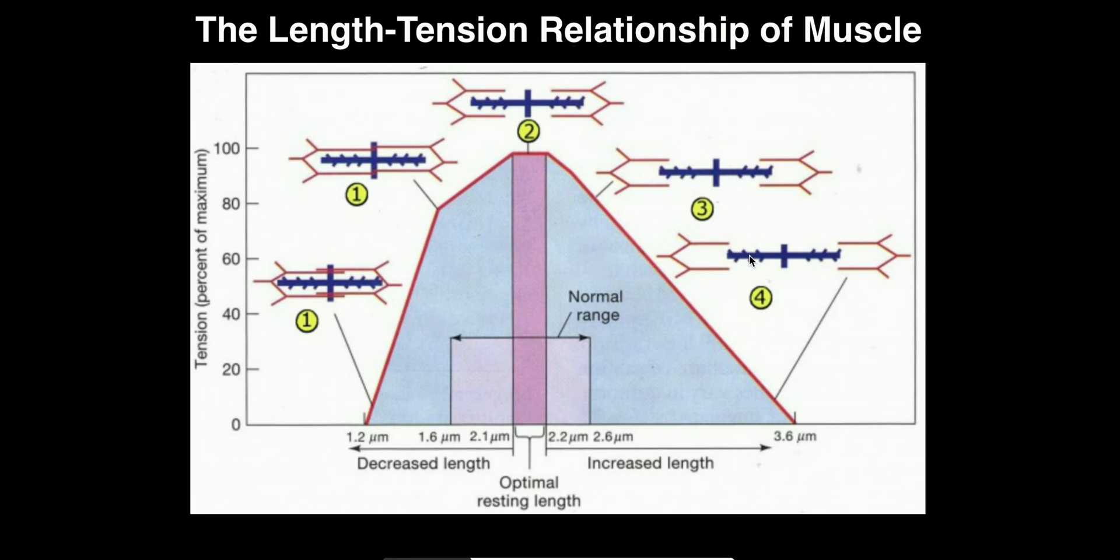Now, if we go to number 4 here, notice it's lengthened to the point where none of the actin is actually overlapping with the myosin. Or we could say none of the myosin heads are overlapping with the actin. That's going to give us very low tension or none at all. So this side of the graph tells us that in order to get maximum tension developing in the muscle fiber, you have to have as many myosin heads bound to actin as possible. As you start to decrease that percentage of myosin heads that are bound to actin, from here maybe about 40% of them to zero, the tension is going to drop.